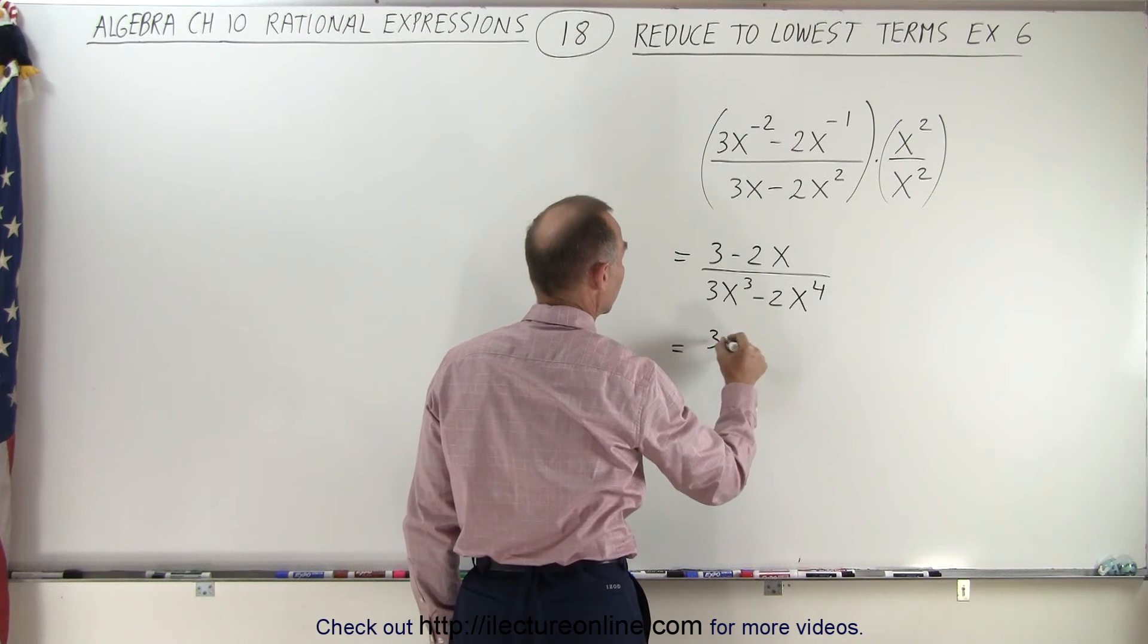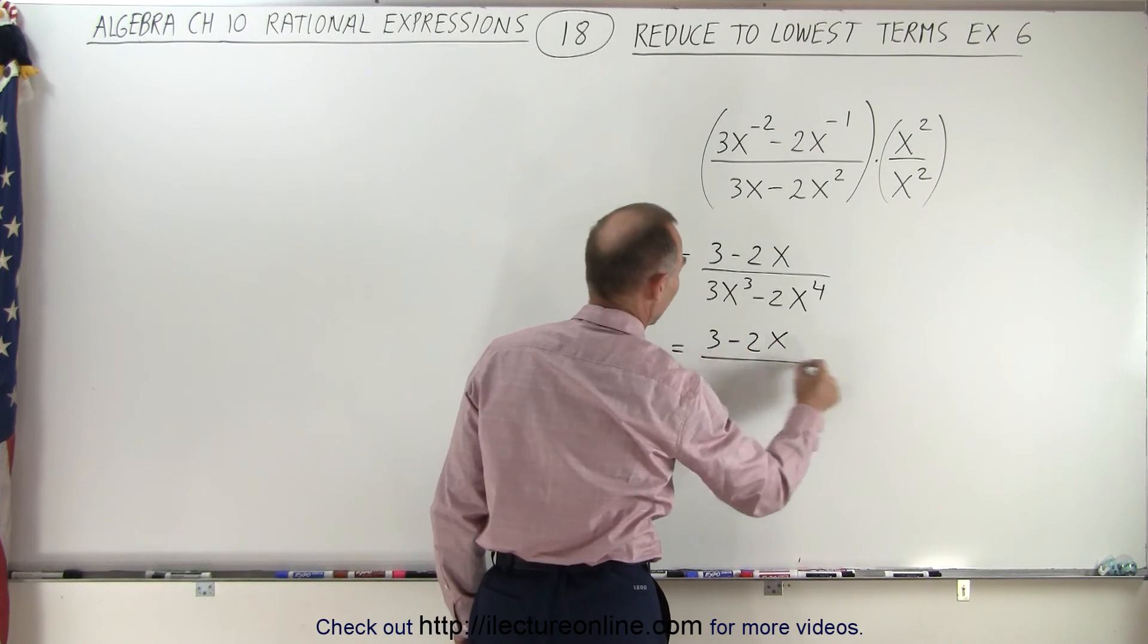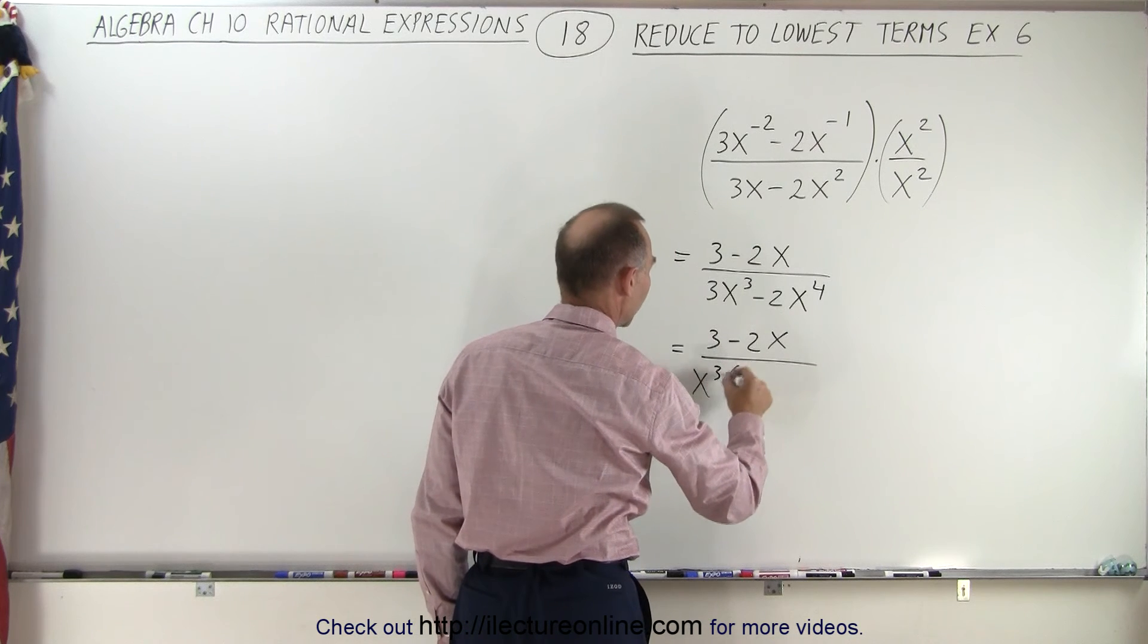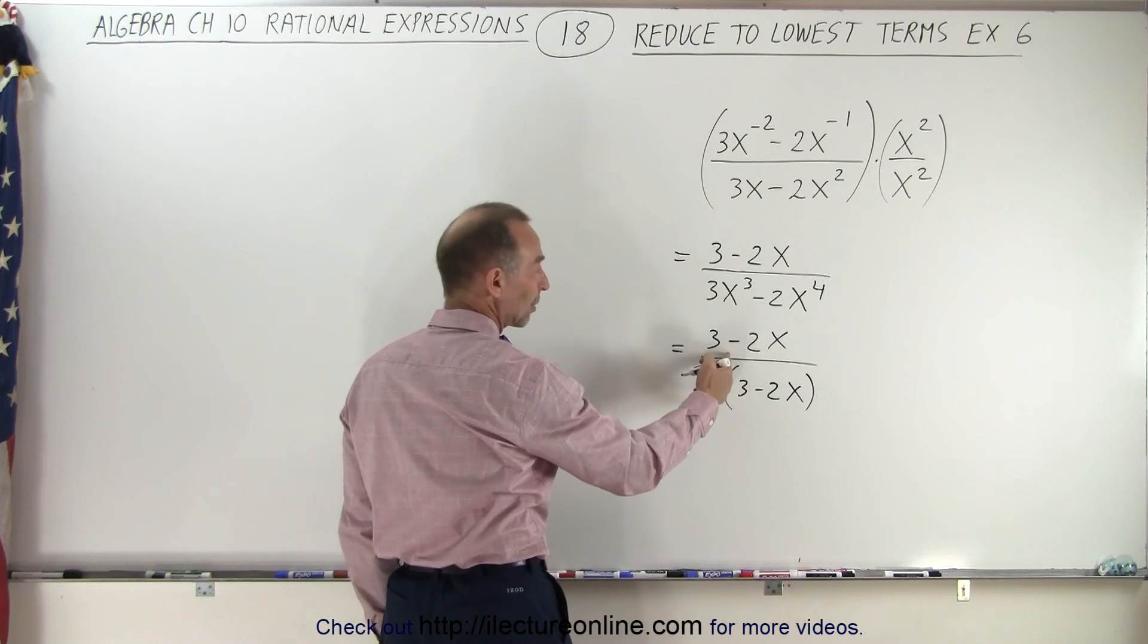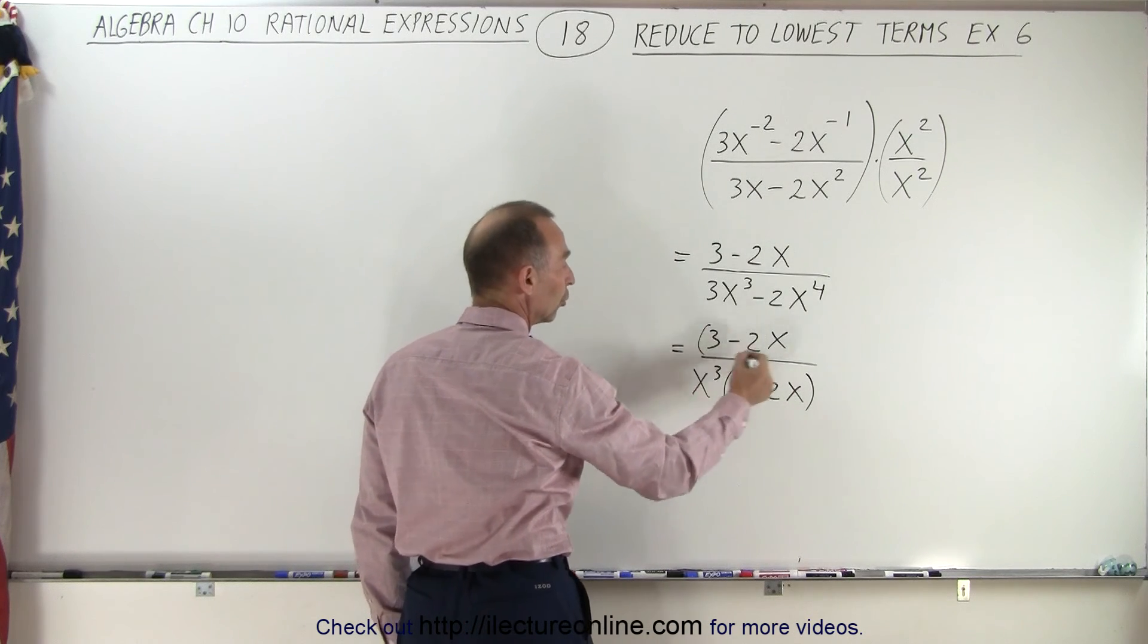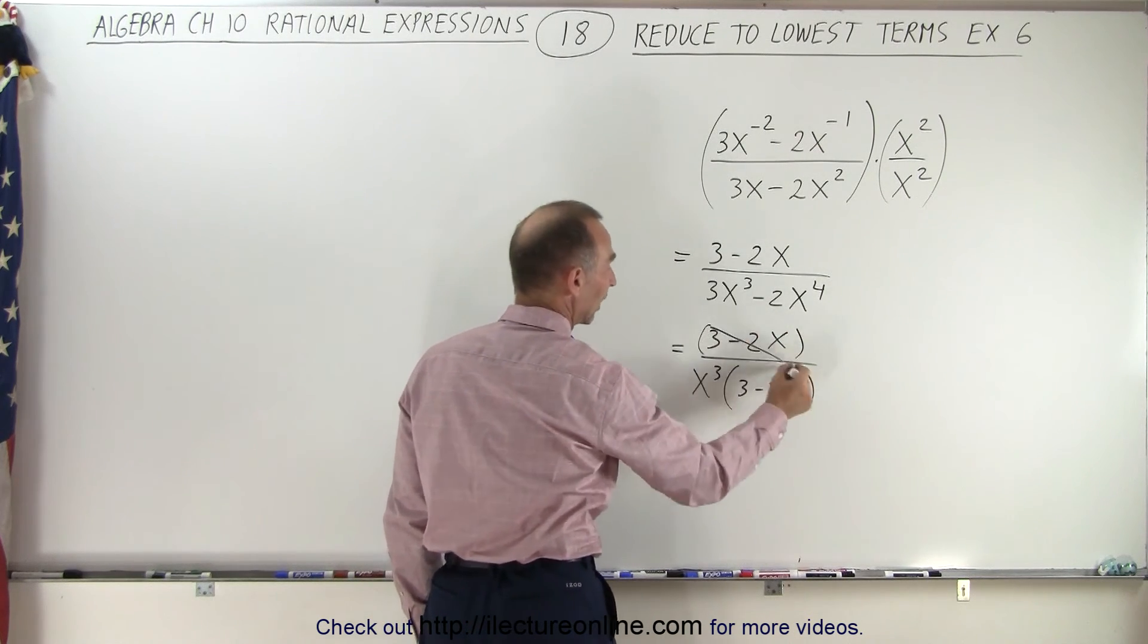So this is equal to 3 minus 2x divided by x cubed times, and we're left with 3 minus 2x. And then we see that 3 minus 2x is common in both the numerator and the denominator, so that cancels out.